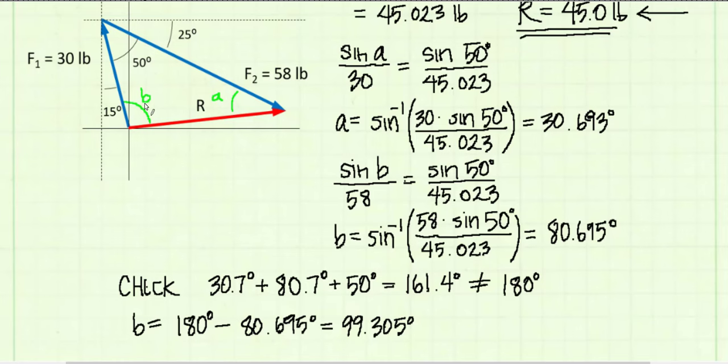So here's a good lesson from this. Draw your vector diagrams to scale so you can recognize if you have an error, or at least have a better chance of recognizing it. If we did a quick check and added 30.7 degrees to 99.3 degrees to 50 degrees, our three angles, that would indeed equal 180 degrees.